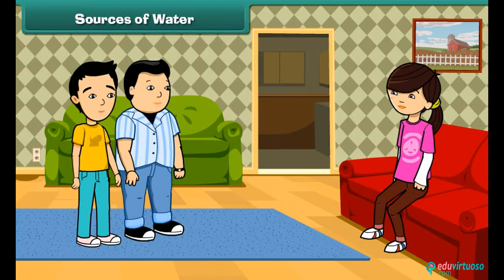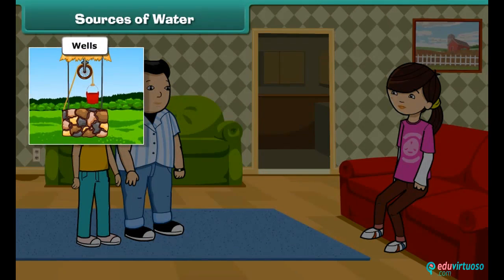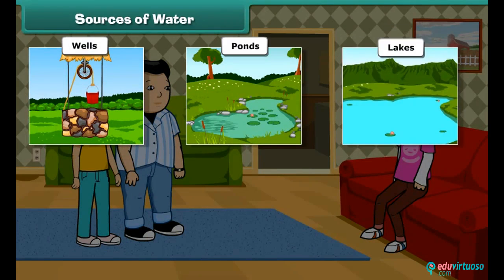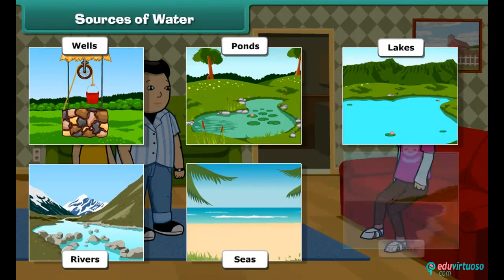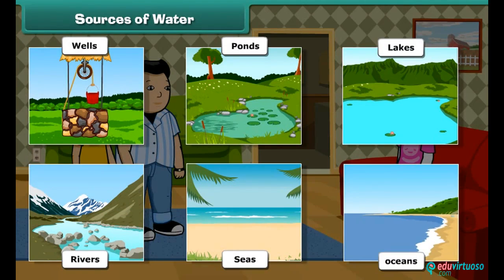Sister, from where can we get water? Oh, you are asking about the sources of water. Actually, water has a limited number of sources, like wells, ponds, lakes, rivers, seas, and oceans. Besides these, groundwater is also an important source of water.